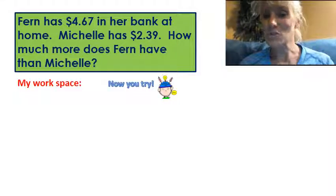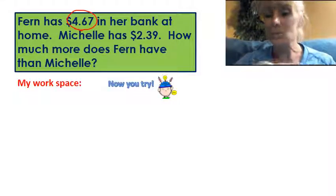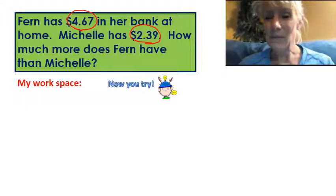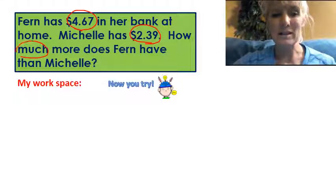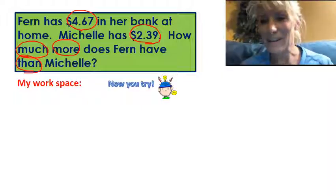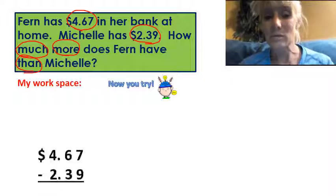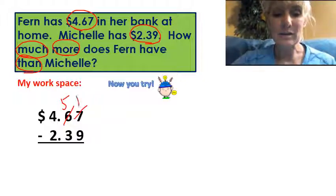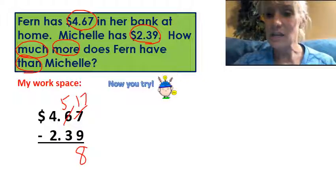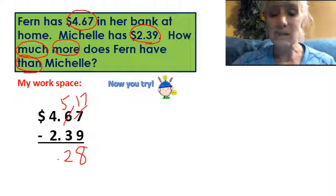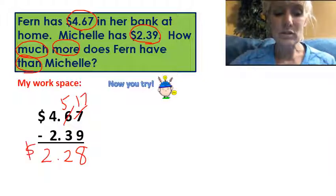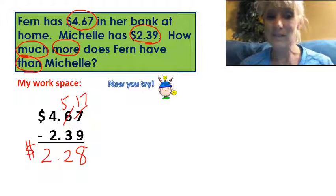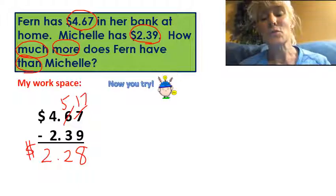Okay, I hope that you tried this out on your own. I hope that first of all you circled important information. The four dollars and sixty-seven cents is important. The two dollars and thirty-nine cents is important. And then we have to look at what they're actually asking — how much more than. Whenever we compare, we subtract. So I'm going to go ahead and subtract these two. I have to go over here, make this a 17. This becomes eight. Five take away three is two. Drop down my decimal point. Four take away two is two. Two dollars and twenty-eight cents is how much more money Fern has than Michelle. And I hope you're getting better at word problems with money.